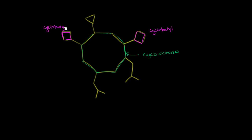Now let's think about this one right over here. How many carbons are there? We have one, two, three carbons. Our prefix when we're dealing with three carbons is 'prop,' and they're in a cycle as well. So this is a cyclopropyl group.